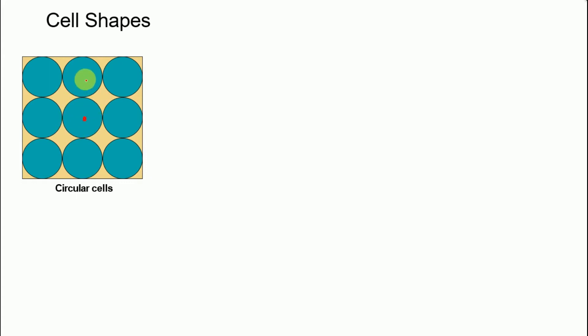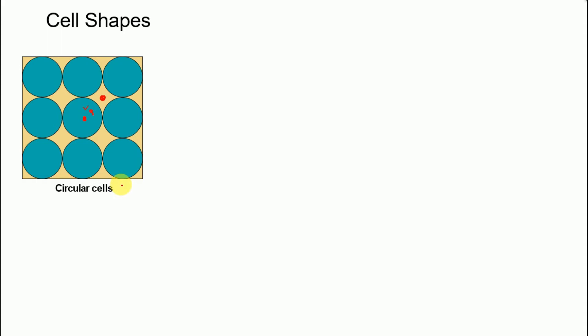Let us examine if circular cells can be used in an actual network environment. We have different base transceiver stations stacked together in an array structure. For users within a cell, they have coverage, but for users outside the cell — specifically in the gaps — those users are not covered from any of these cells. So circular cells are not a viable option to design a cellular network setup.